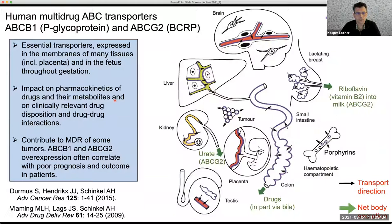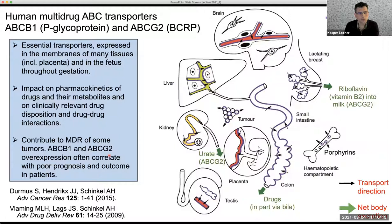Most of what they do is move drugs, which is tremendously important for the pharmaceutical industry because these transporters impact the pharmacokinetics of almost any drug we take, affecting drug-drug interactions and clinically relevant drug disposition. For example, in the brain, there is a very strong concentration of these transporters at the blood-brain barrier, making it hard for drugs we want to deliver to the brain to get in. These transporters are also notorious for their role in multi-drug resistance of cancer cells.